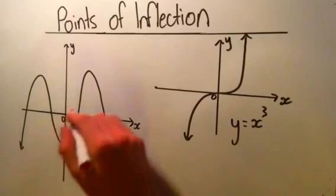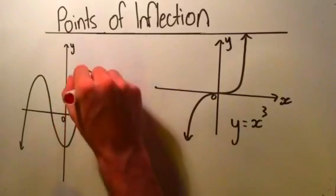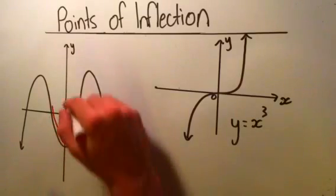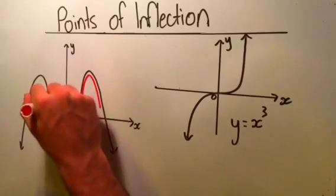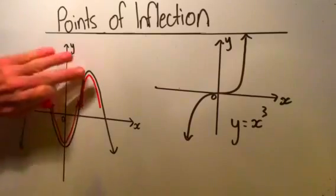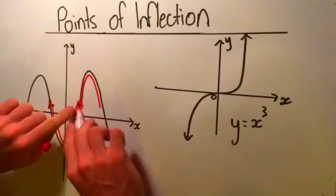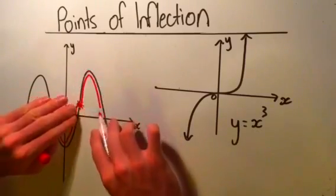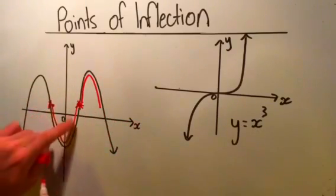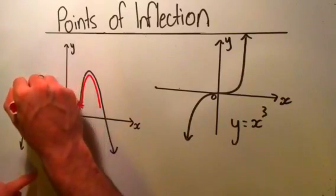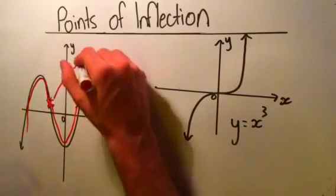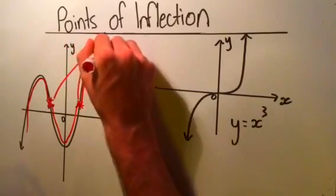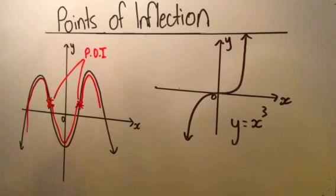They're the points where a curve will go from concave up, like here, to concave down. We can see that at this point the curve is concave up, and then after about here the curve goes to being concave down, and then over at this point the curve goes from being concave up to being concave down again. So it's these two points that are our points of inflection. It's the points where the curve starts to bend the other way.